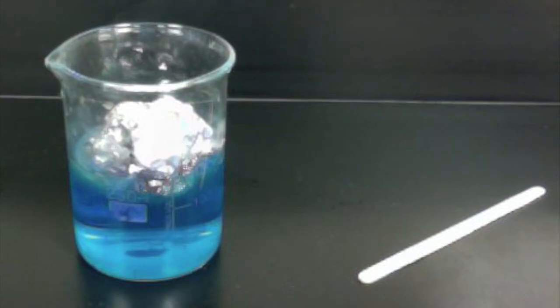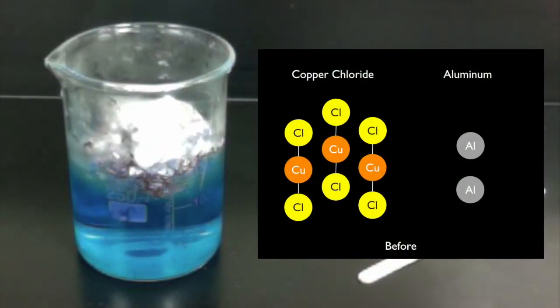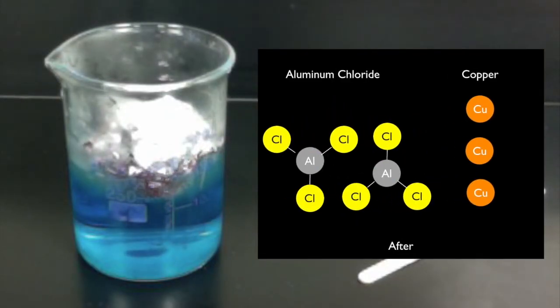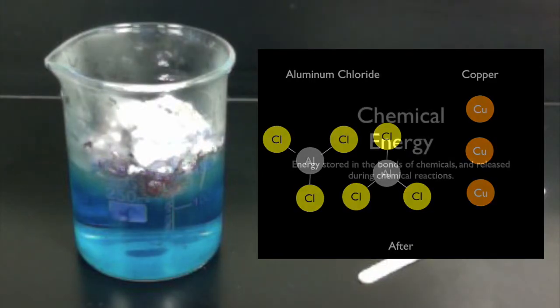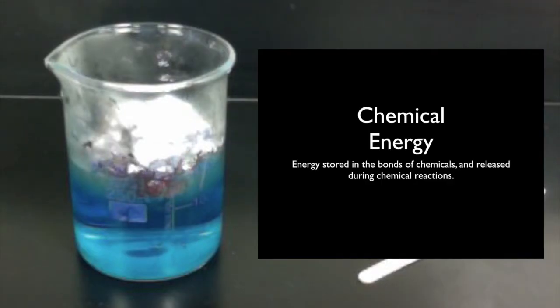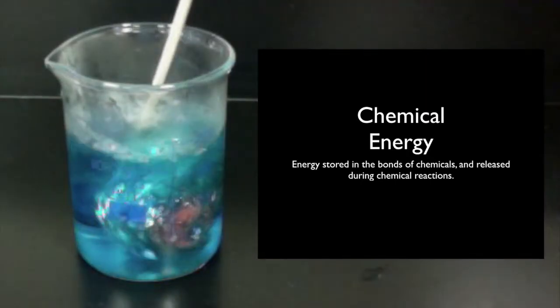We added a thermometer to the reaction to see how much thermal energy was being produced with each metal. In this reaction, the copper chloride is rearranging its atoms with the aluminum so that they form a new substance, aluminum chloride and copper. In the process, we're seeing that there's chemical energy stored in the substances of copper chloride and aluminum, stored in the bonds between them.